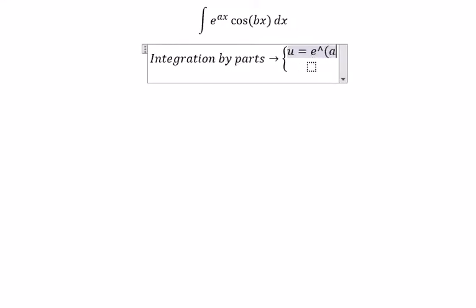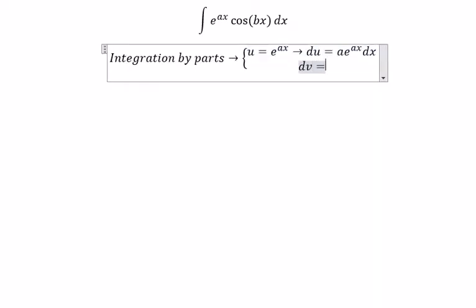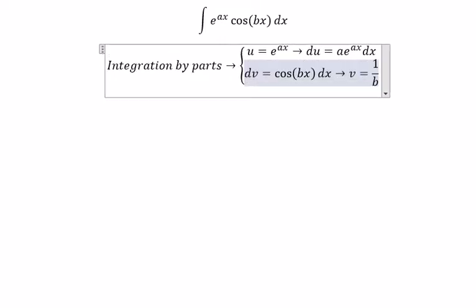to the power of ax. So for du, we get a times e to the power of ax dx. For dv, we have cosine(bx) dx, so v equals 1 over b